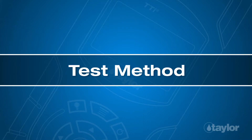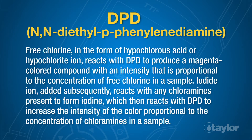Test method: DPD. Free chlorine, in the form of hypochlorous acid or hypochlorite ion, reacts with DPD to produce a magenta-colored compound with an intensity that is proportional to the concentration of free chlorine in a sample. Iodide ion, added subsequently, reacts with any chloramines present to form iodine, which then reacts with DPD to increase the intensity of the color proportional to the concentration of chloramines in a sample.